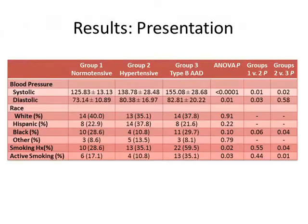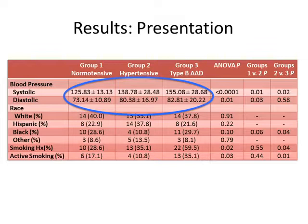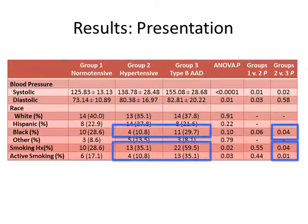On presentation, we found that compared to normotensive and hypertensive patients, AAD patients had elevated systolic blood pressures — even after administration of IV antihypertensives en route to the hospital. In addition, AAD patients were more likely to be black, have a smoking history, and be actively smoking compared to hypertensive patients.